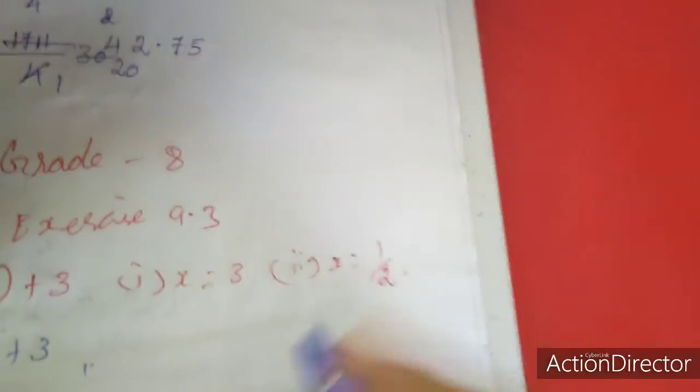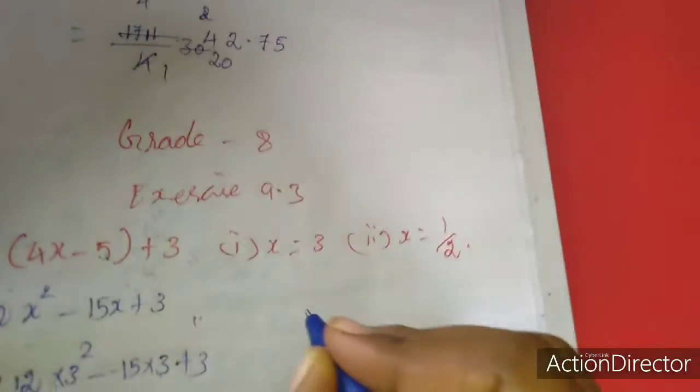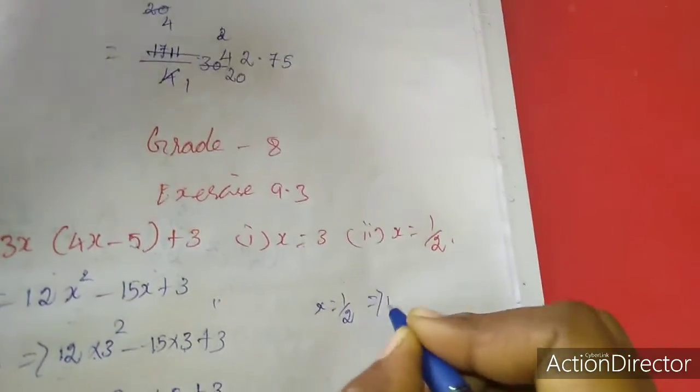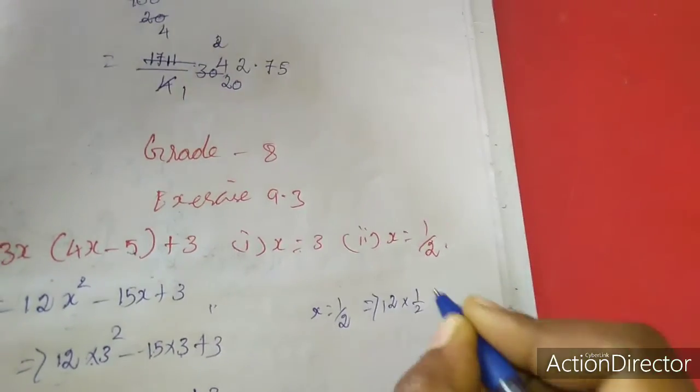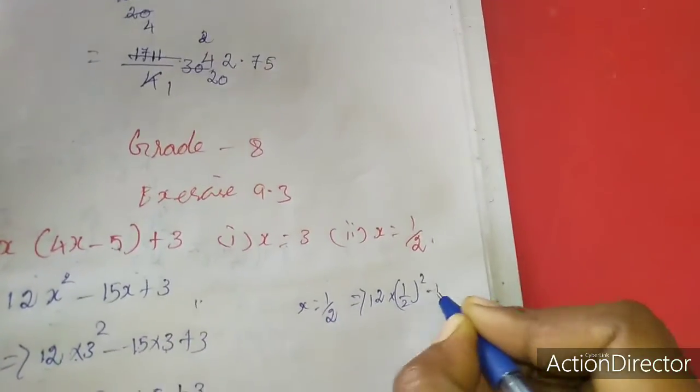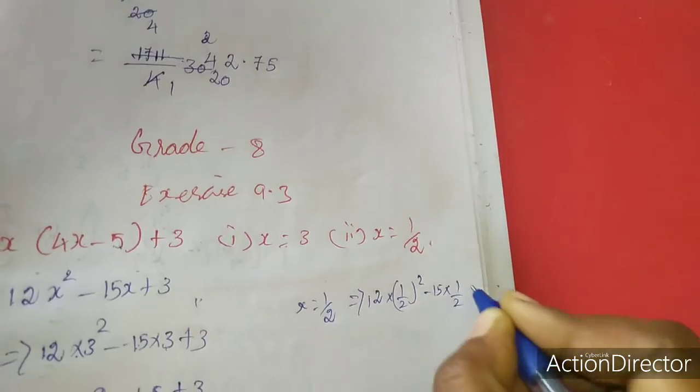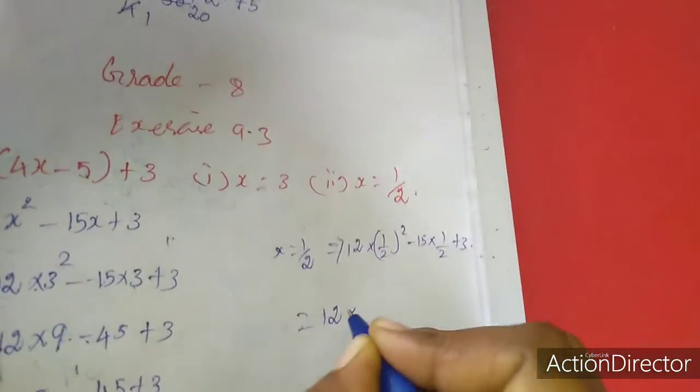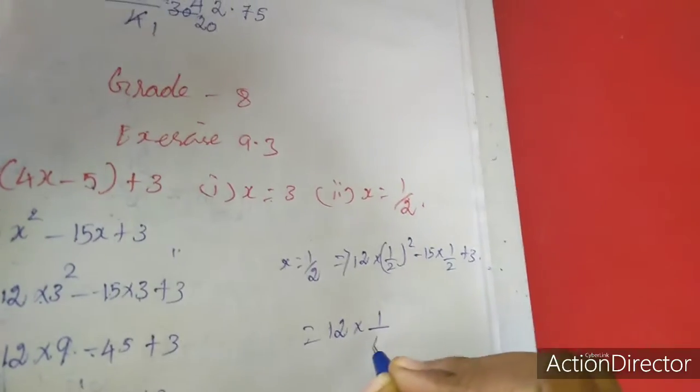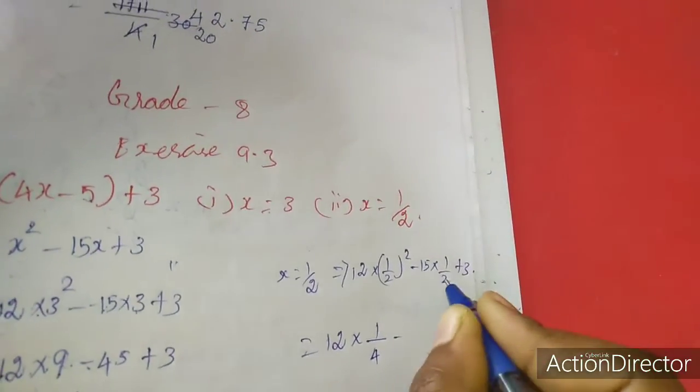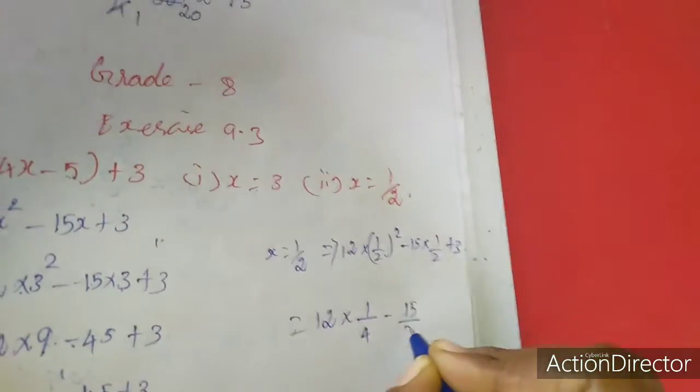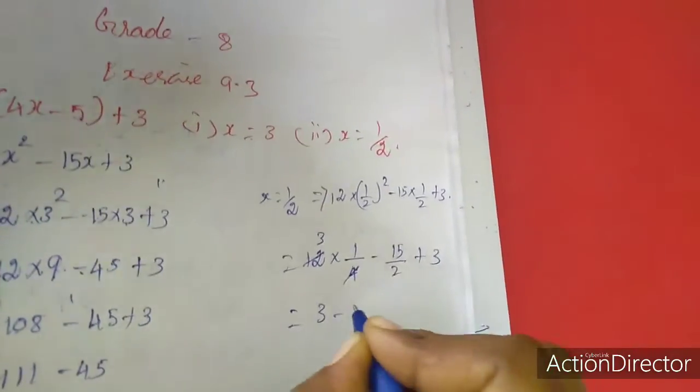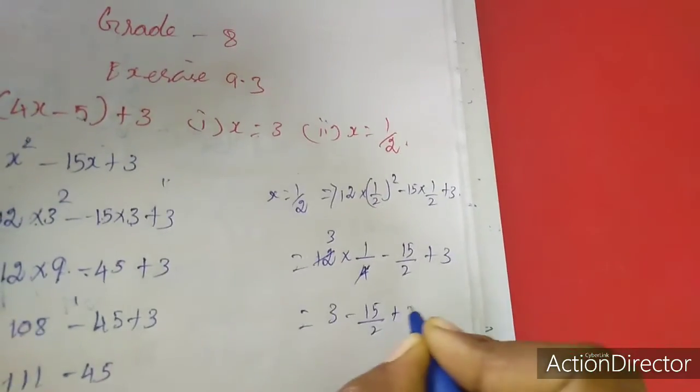Now second subdivision x equal to 1/2. Which implies 12 into (1/2) whole square minus 15 into 1/2 plus 3. So 12 into 1/2 square means 1/4 minus 15/2 plus 3. Cancel, so 3 minus 15/2 plus 3.